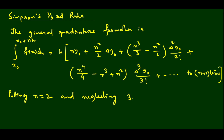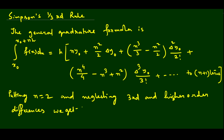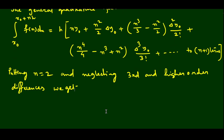We are neglecting third and higher order differences. So from the delta-cube term onward, those terms will not come. Now we are putting n equals to 2.